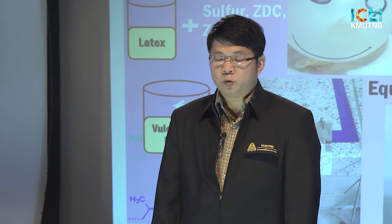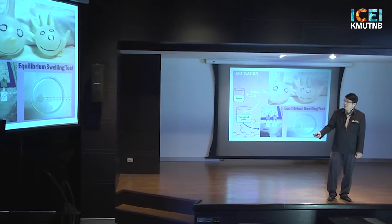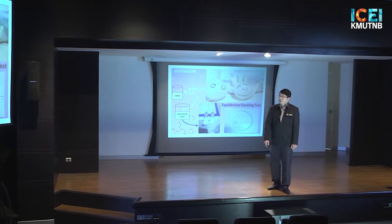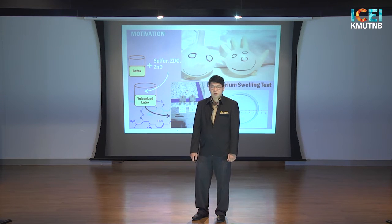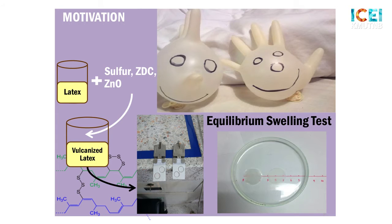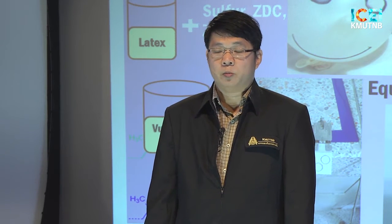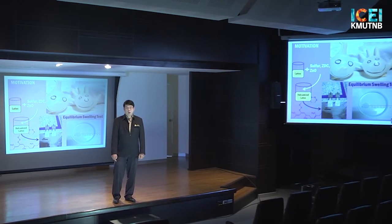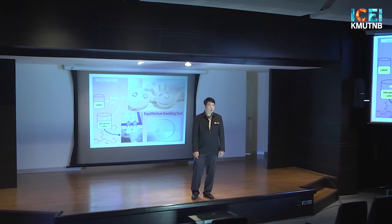In terms of quality assessment, there has to be a good way to measure the progress of this vulcanization. A common way to do this is to use what we call the equilibrium swelling test. As shown in these pictures, we usually use a test piece, dip it into the rubber latex, and use an appropriate solvent. After that, we remove the film and measure the expansion from its original size, which gives an indication of how far the vulcanization has progressed. This is a good method — quite simple and reliable — but as you can see, it involves many steps and can be quite time-consuming.